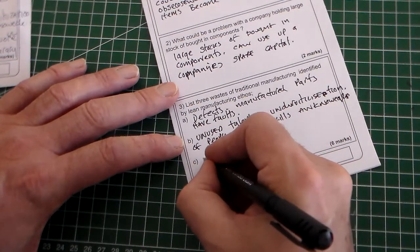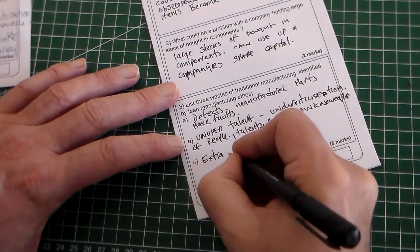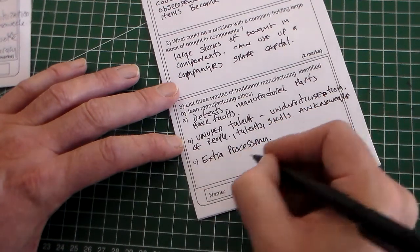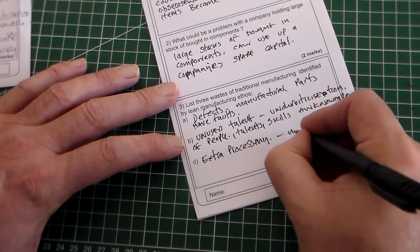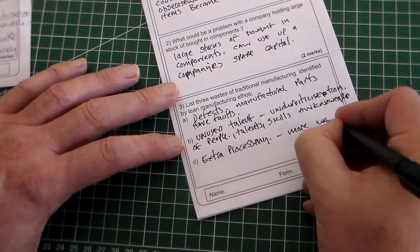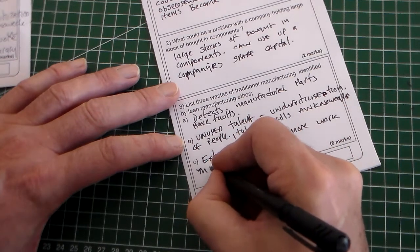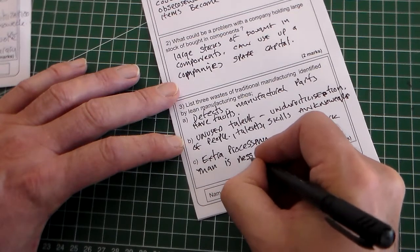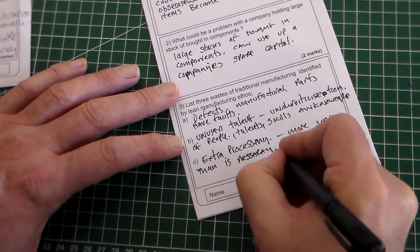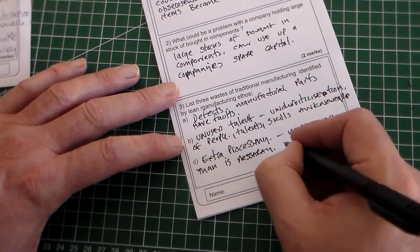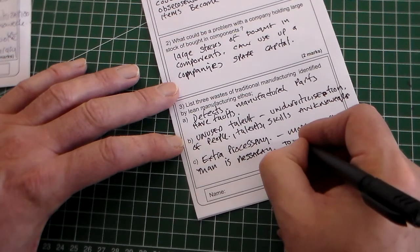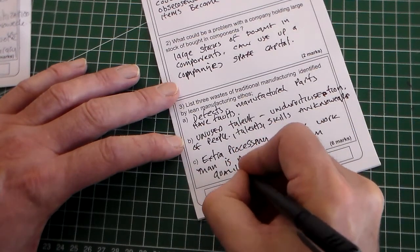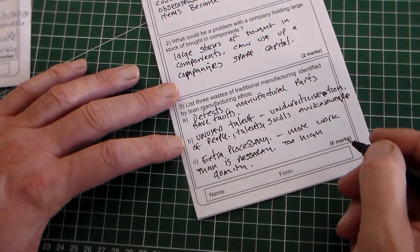And last of all, extra processing. Extra processing is just more work than is necessary, or higher quality, too high quality, so higher than the customer requires. That's another waste.